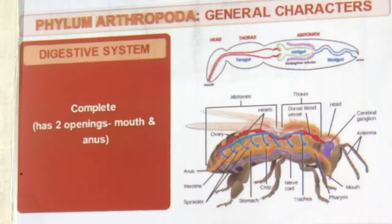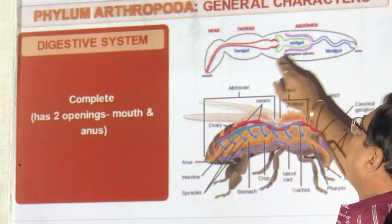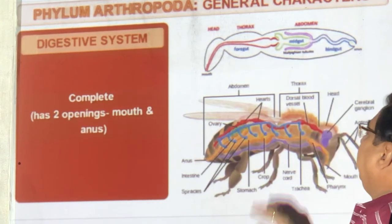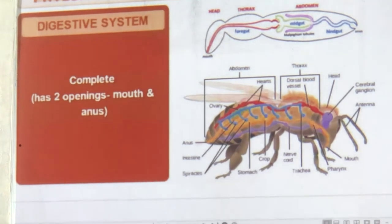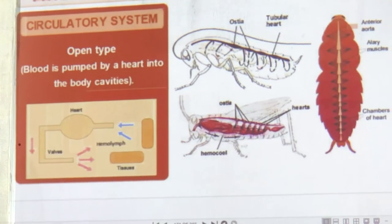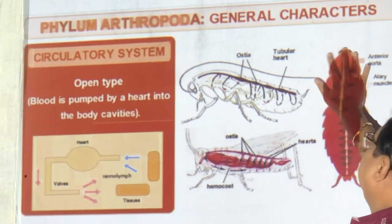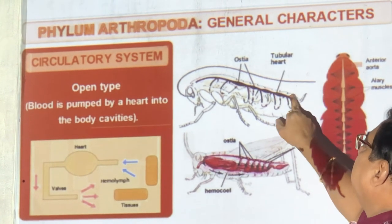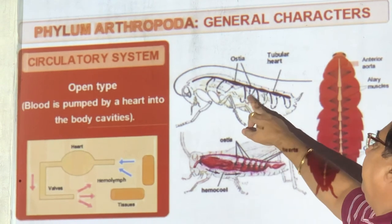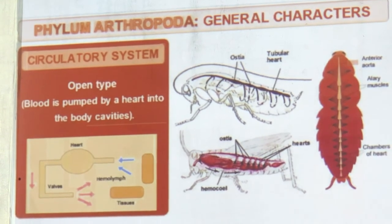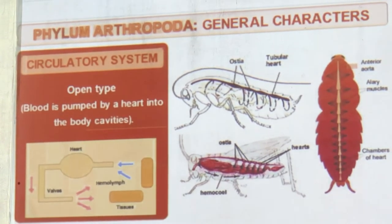The digestive system in Arthropoda is complete. The body has three regions: head, thorax, and abdomen. The digestive system has foregut, midgut, and hindgut. Circulation is open type — blood goes into the body cavity, then enters the heart. Blood vessels are not closed; they open up. Blood goes through the heart, through tissues, and then tissue fluid goes back to the heart.